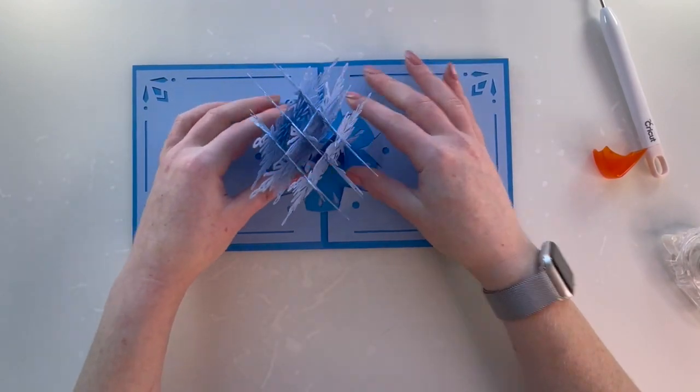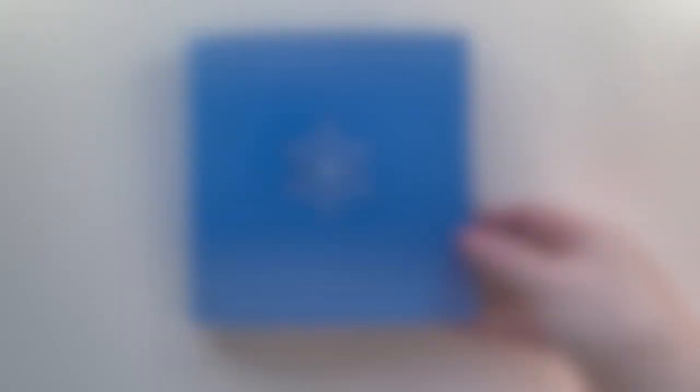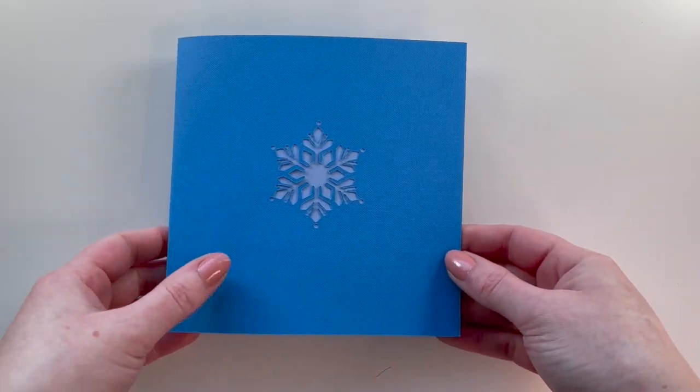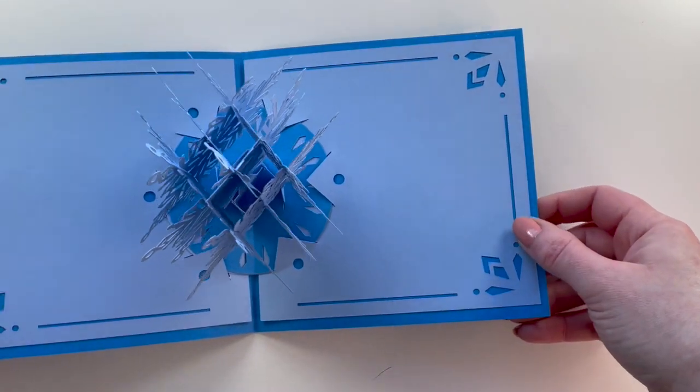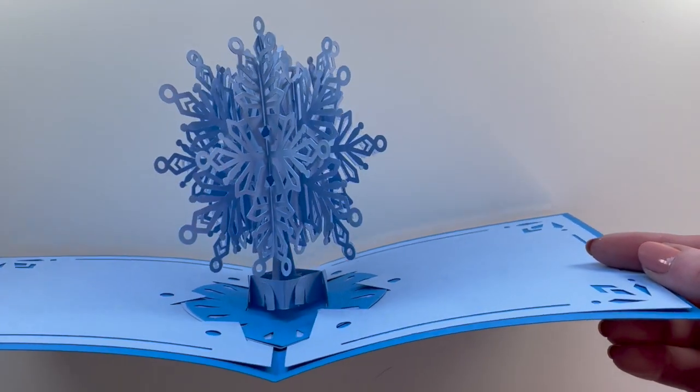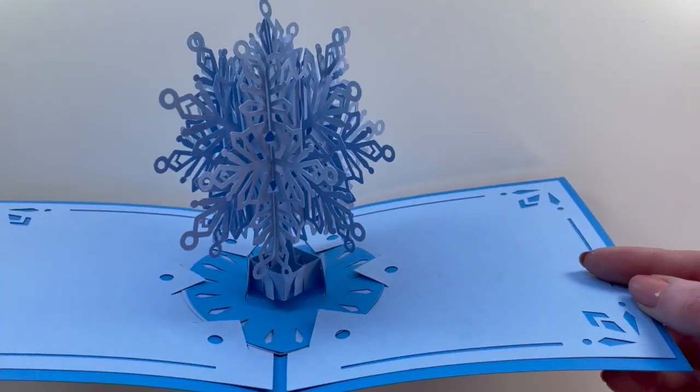You could choose to glue that down or not—it's going to stay in there pretty well. Let's see what this fully looks like. There is the final card. You can see the cute little snowflake on the front. You open it up and you have that super cute snowflake.